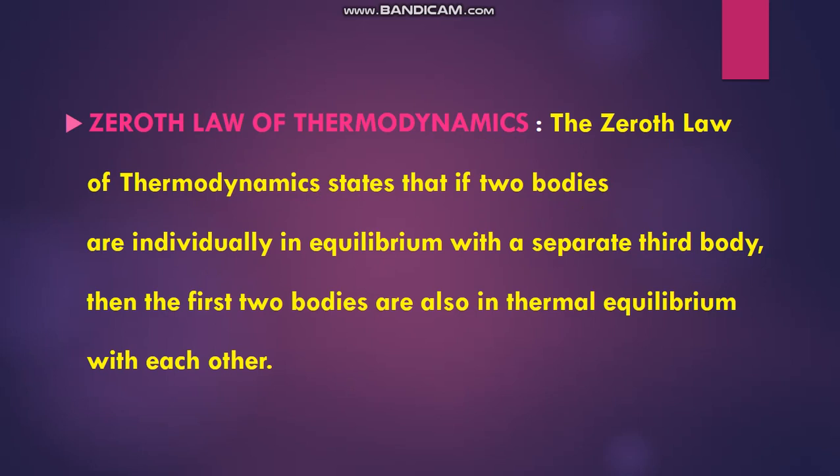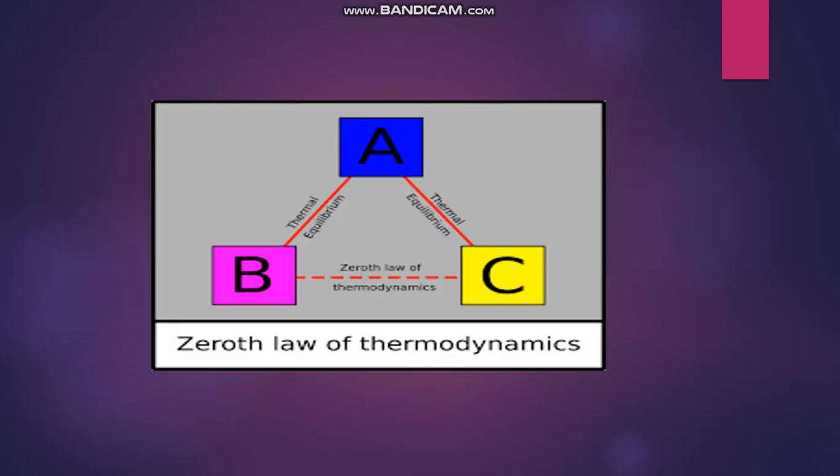The first is the Zeroth Law of Thermodynamics. The Zeroth Law states that if two bodies are individually in equilibrium with a separate third body, then the first two bodies are also in thermal equilibrium with each other. Here we can see three bodies A, B, and C. A, B, and C are in equilibrium, then A-B and A-C are also in thermal equilibrium with each other. That represents the Zeroth Law of Thermodynamics.